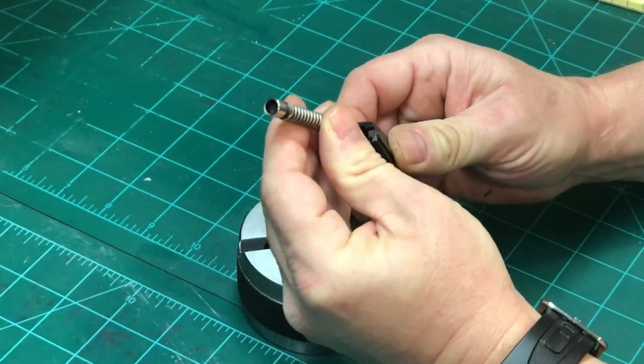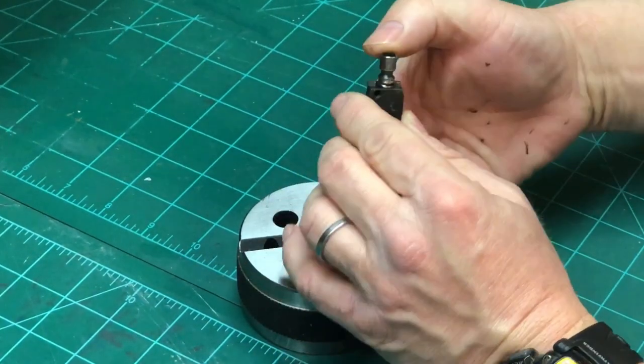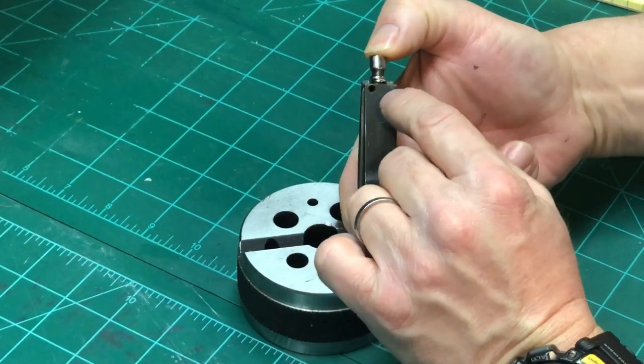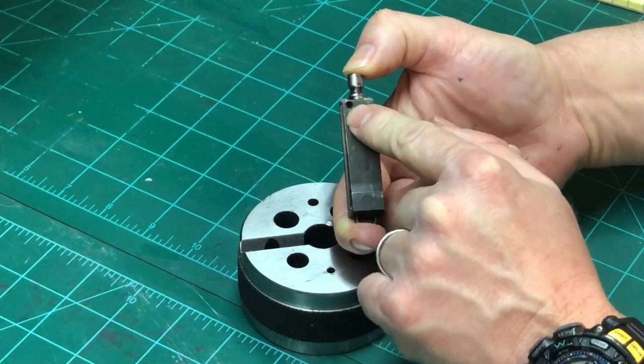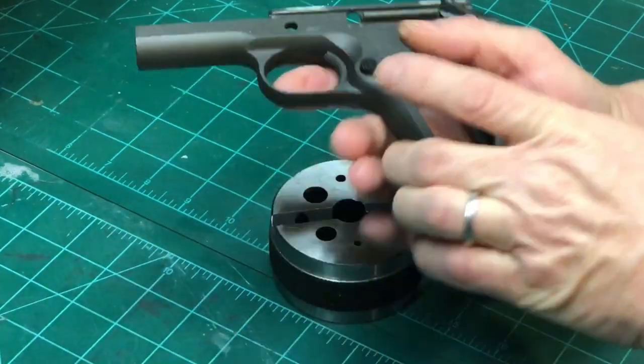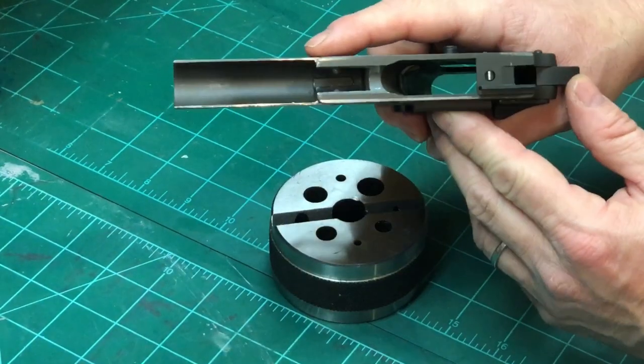It fits down inside the assembly and then is depressed and held in place by a mainspring housing pin that fits in this hole, and then is held into the frame. Whoops, safety check, looks clear.